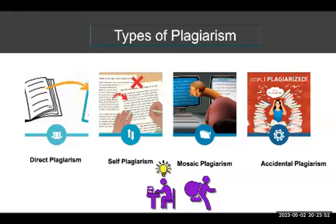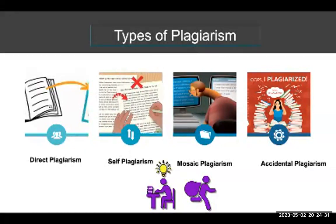The third type is mosaic plagiarism. Mosaic plagiarism occurs when a student borrows phrases from a source without using quotation marks, or finds synonyms for the author's language while keeping the same general structure and meaning of the original. Sometimes called patch writing, this kind of paraphrasing — whether intentional or not — is academically dishonest and punishable, even if you footnote your sources.